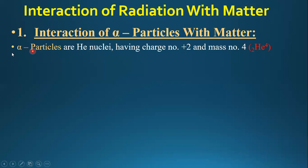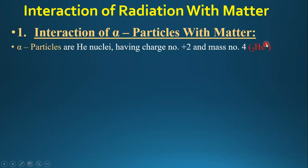First of all, what are alpha particles? Alpha particles are basically the helium nuclei. They have a charge number of plus two and a mass number of four — consisting of two protons and two neutrons.